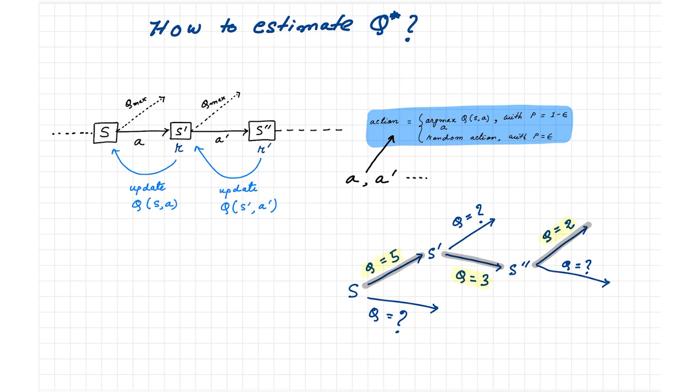Now the question is, how does a robot or an agent autonomously figure out these optimal Q values? Here comes the Q-learning update rule.